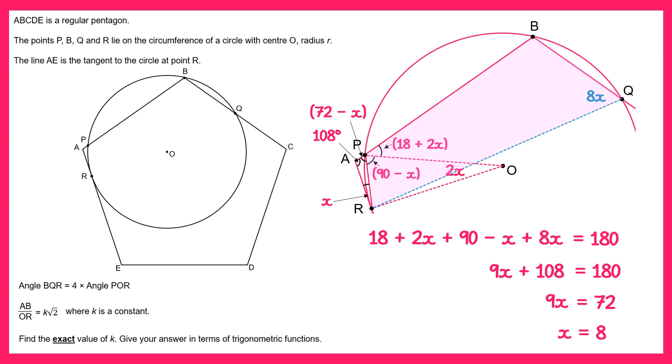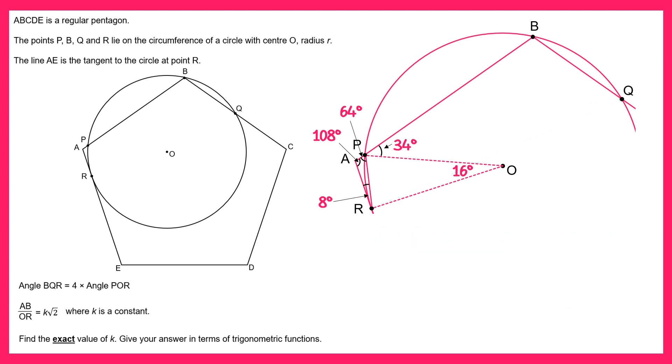So we can replace all of the x's with 8 degrees and your angles would now look like this. Now in the question we're told that if you do AB divided by OR you end up with K root 2 where K is some constant that we need to find. So what we're going to do is label the radius of this circle, let's call it R, and we're going to find the length PR first.